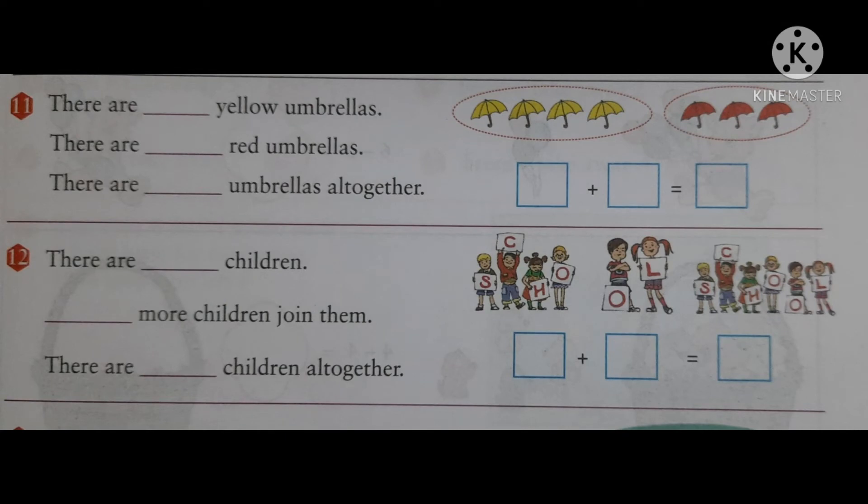There are dash yellow umbrellas. There are dash red umbrellas. There are how many umbrellas all together. So, in the dash also you will write and boxes are given. There also you will write. Number of yellow, number of red and total number.